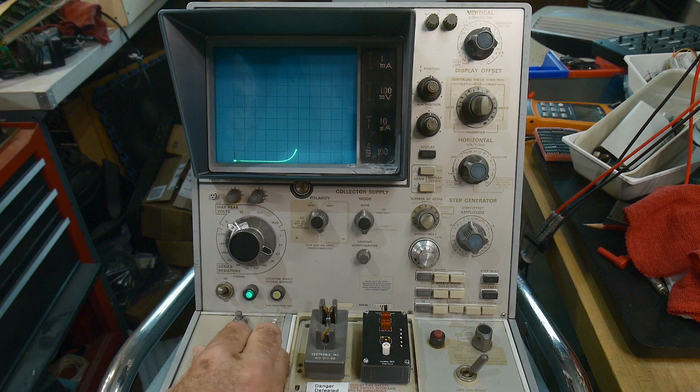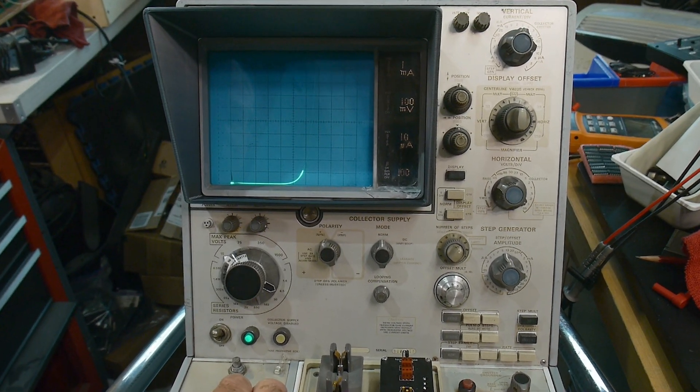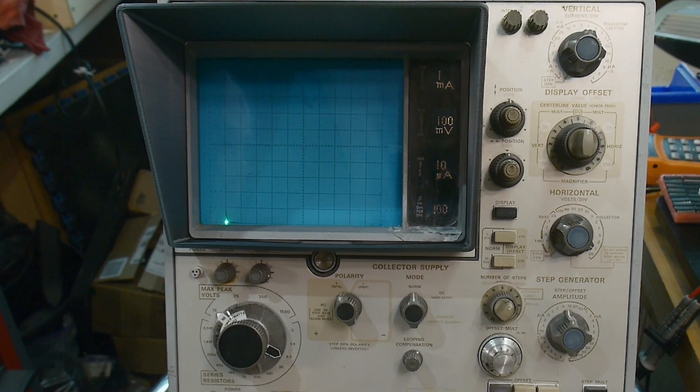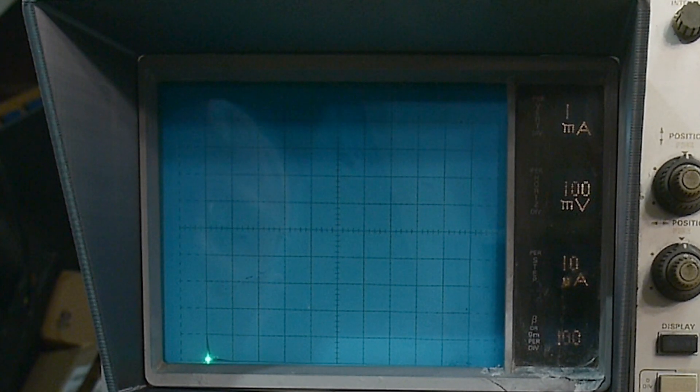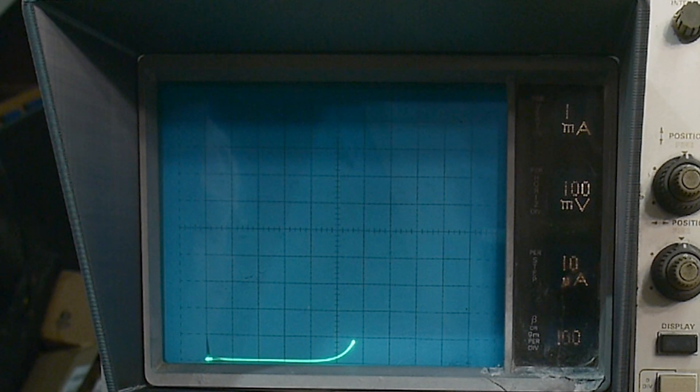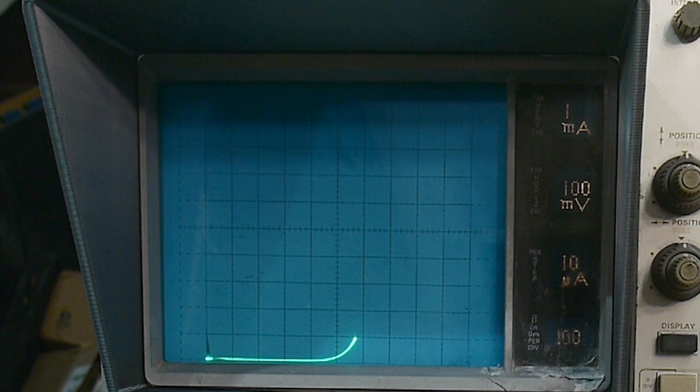Turn it on, we can ramp the current up. So that's a diode and we are at one milliamp per division, so there's 1 milliamp, 2 milliamps, 3 milliamps. We see the forward voltage here.